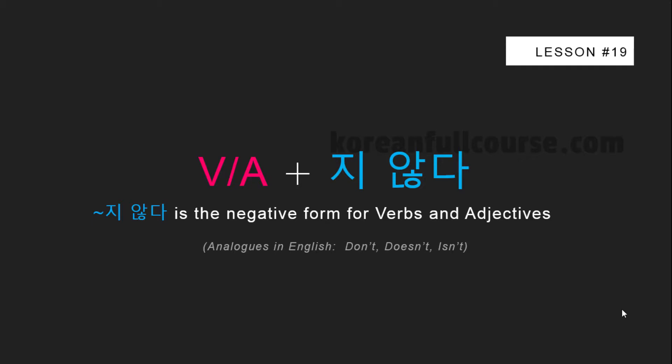In the Korean language, to convert a verb or an adjective to a negative form, you simply need to add 지 않다 to a verb or an adjective stem.